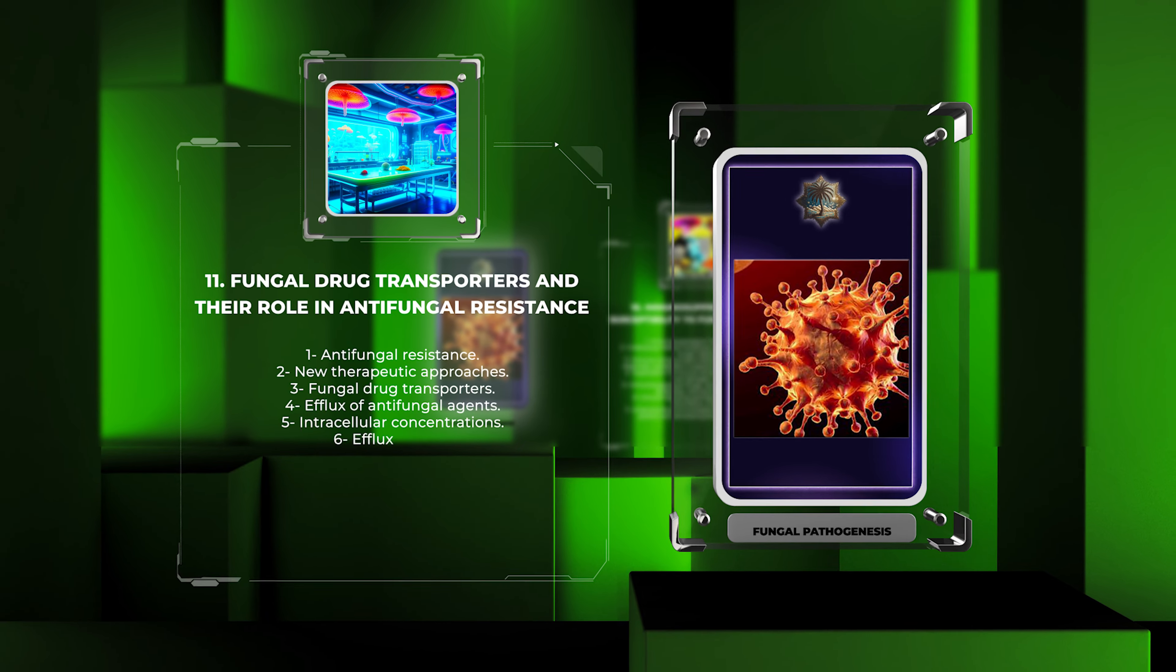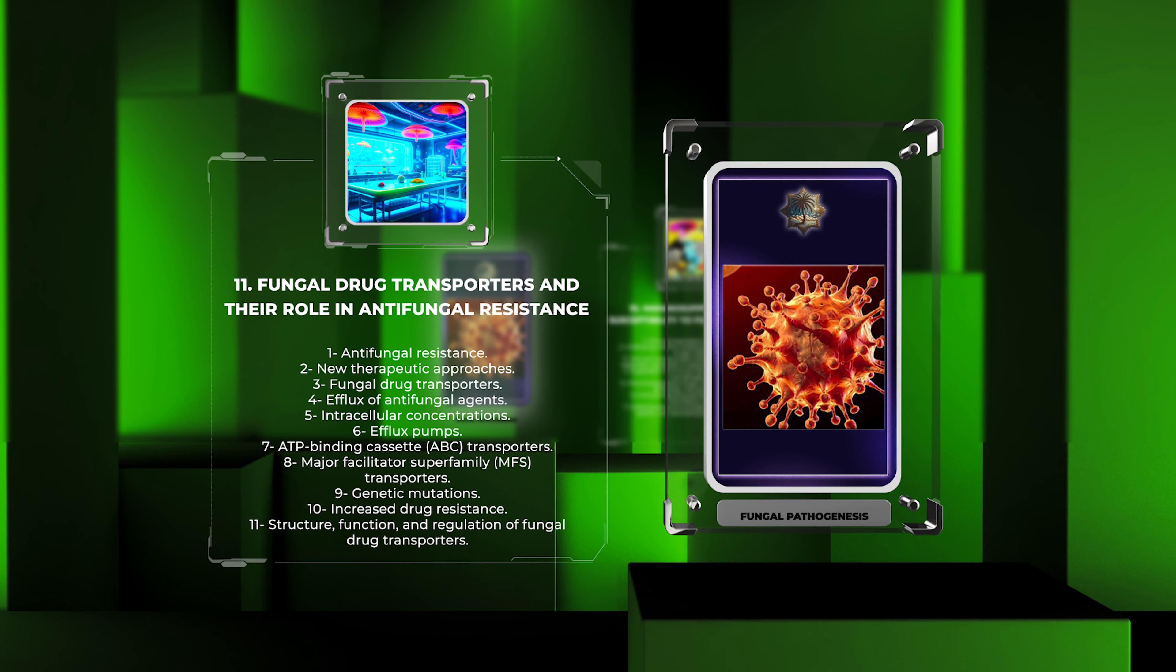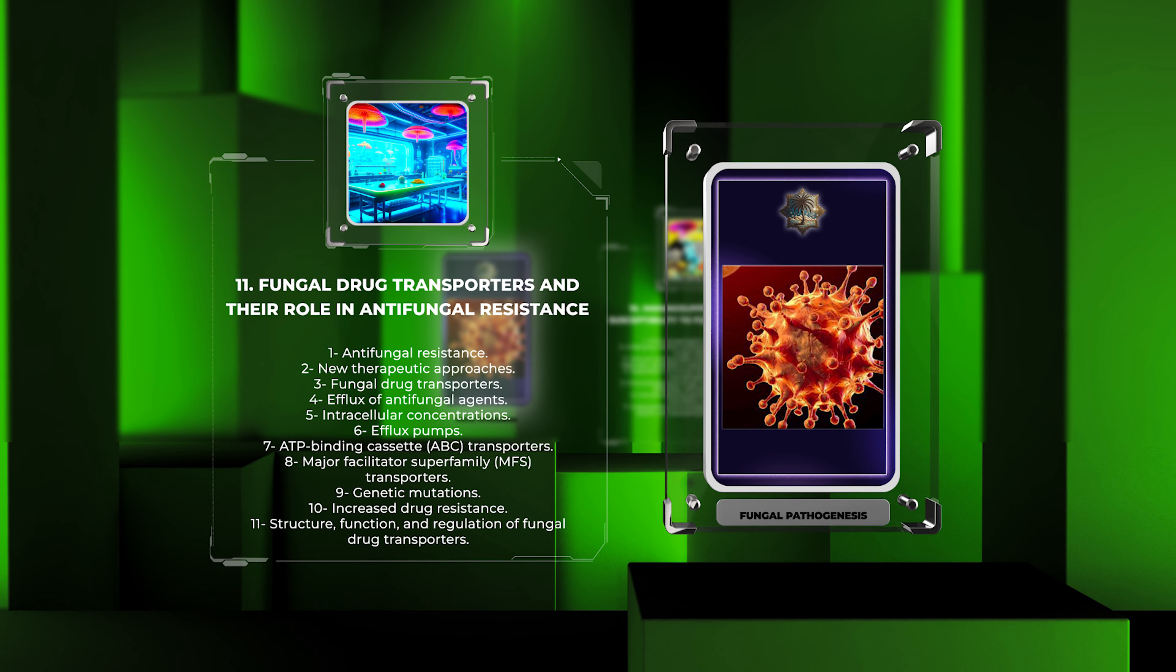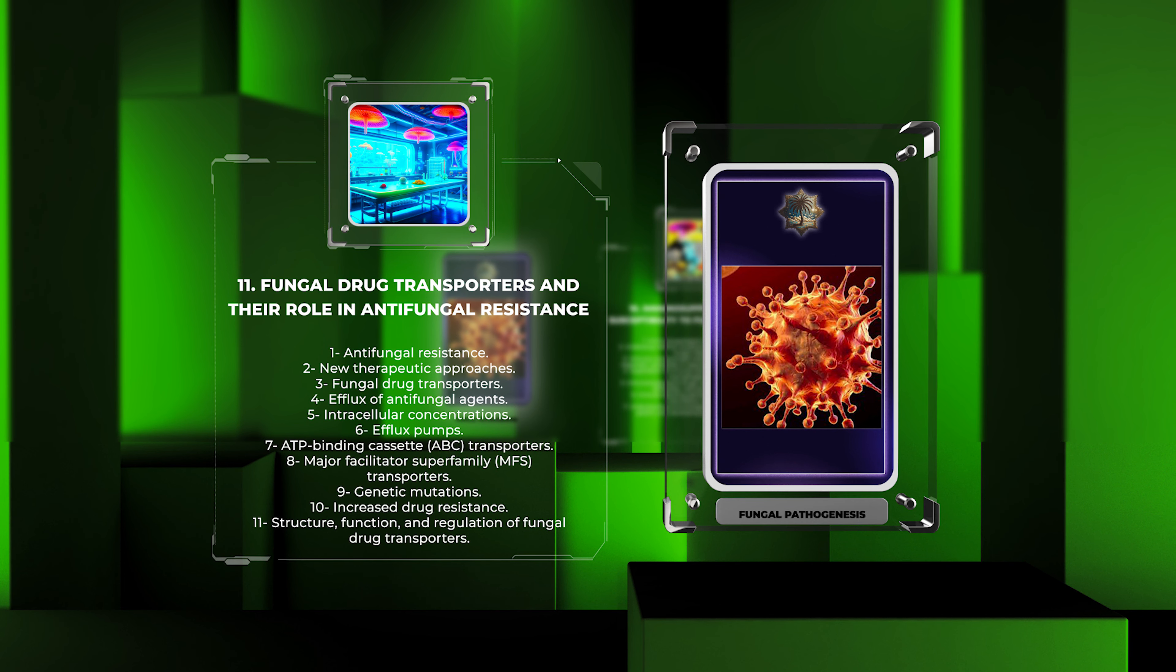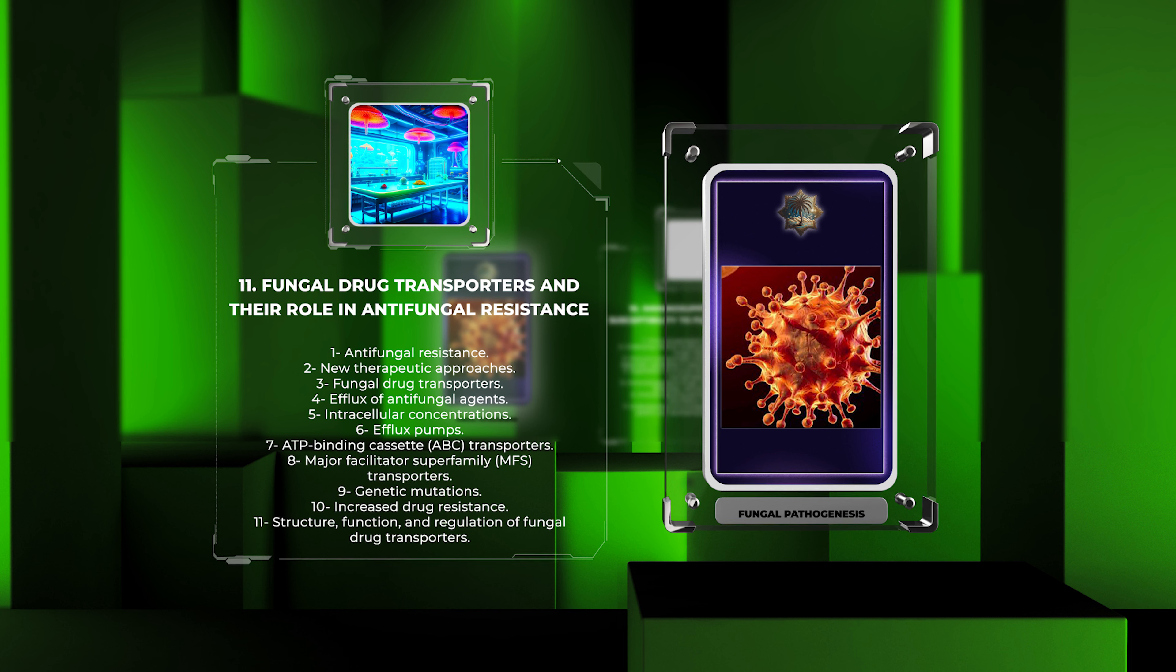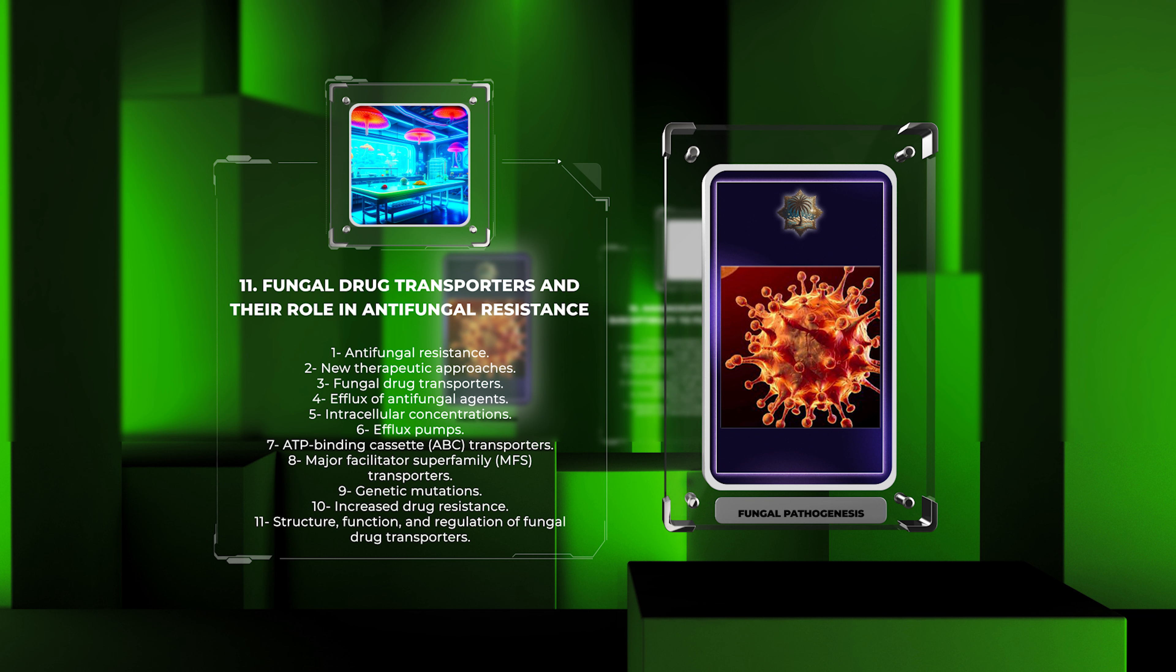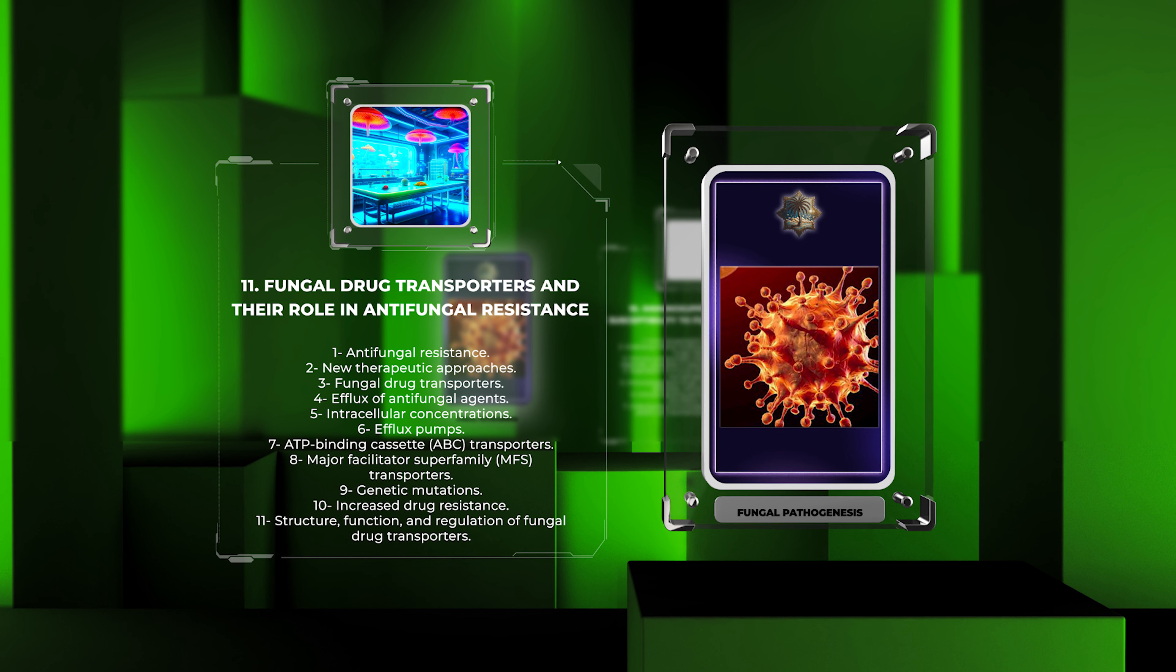Antifungal resistance has emerged as a significant clinical challenge, necessitating the development of new therapeutic approaches. Fungal drug transporters play a crucial role in antifungal resistance by mediating the efflux of antifungal agents from fungal cells, thereby reducing their intracellular concentrations. Efflux pumps, such as the ATP-binding cassette (ABC) and major facilitator superfamily (MFS) transporters, actively pump antifungals out of the cells, rendering them less effective. Moreover, genetic mutations in these transporters can confer increased drug resistance. Understanding the structure, function, and regulation of fungal drug transporters is critical for combating antifungal resistance and designing more effective treatment strategies.